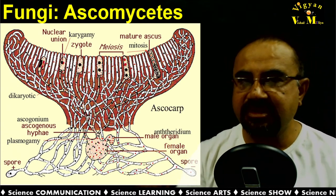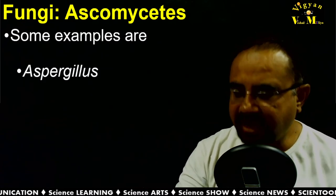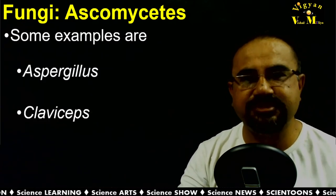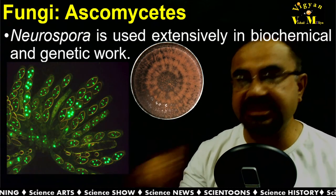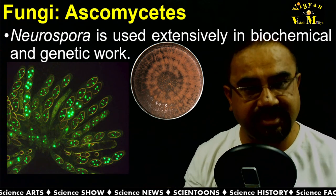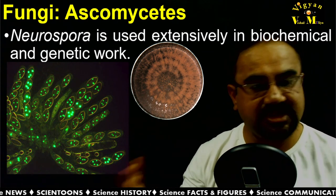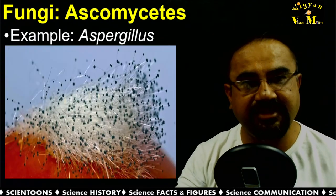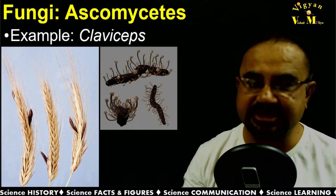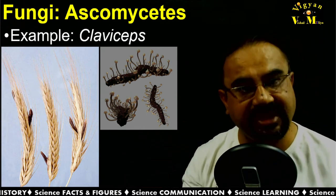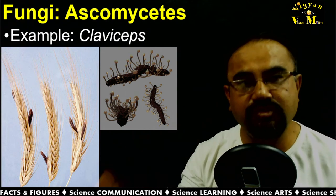Sexual spores are called ascospores and are produced endogenously in sac-like structures called asci — singular ascus. These asci are arranged in a fruiting body called ascocarp of various kinds. Examples of Ascomycetes include Aspergillus, Claviceps, and Neurospora — where Neurospora is extensively used in biochemistry and genetics. Aspergillus and Claviceps are also of medicinal importance.